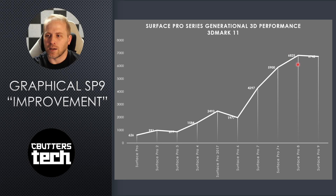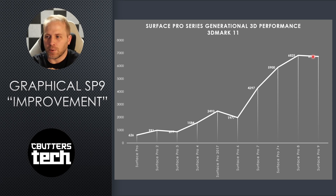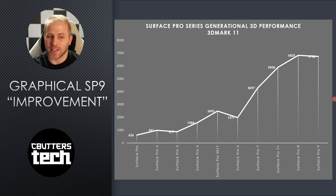You can see we're running into a similar situation again, though not as bad. Alder Lake's iGPU is just not quite as strong as the previous generation. The Surface Pro 8 had a 1.3 GHz iGPU and the new Surface Pro 9 has a 1.25 GHz iGPU, so there's a slight regression in GPU performance — but that's kind of what I predicted and what I'm seeing in the benchmarks.